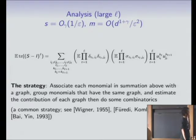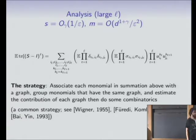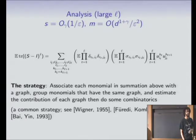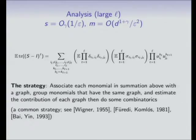The strategy — which has been used before — is to associate with each monomial in the summation a graph, group together monomials with the same graph structure, and then show that the contribution of a graph only depends on graph properties like number of connected components and number of vertices. Then we need to do some counting to count how many different graphs there are with various parameters.